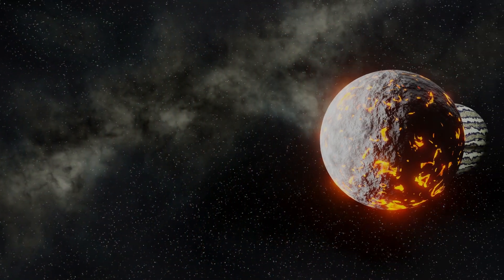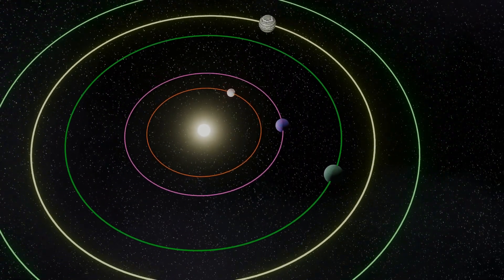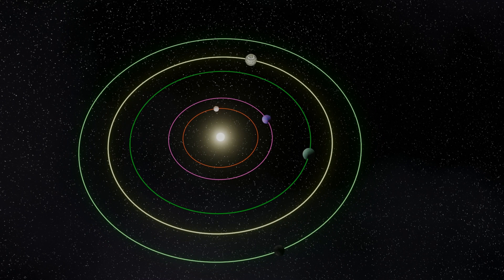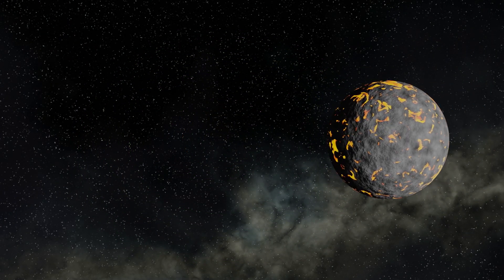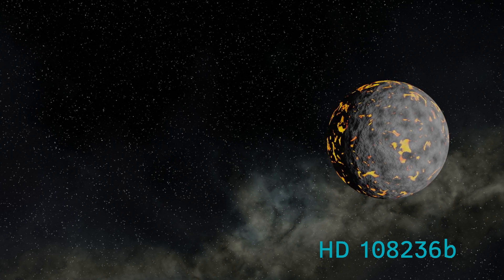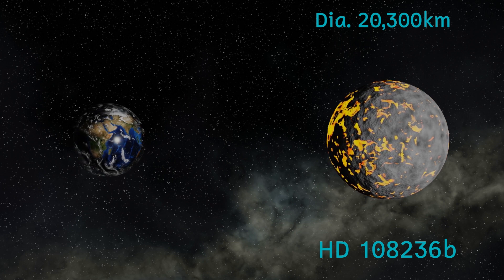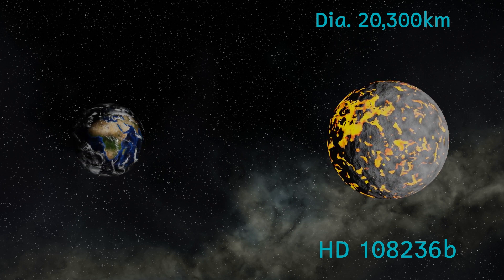The innermost planet is HD108236b, and this lies just 7 million kilometres from the star. It's got an orbital period of a mere three days, 19 hours. Unlike the other three planets discovered by this team, this one is most likely a hot, rocky super-Earth. It's got a radius 1.59 times that of the Earth, and a mass of 4.2 times as great.